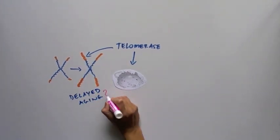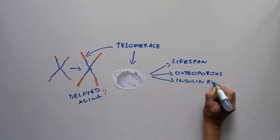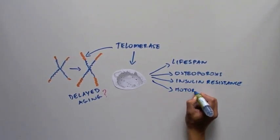So they looked at the lifespan, as well as some aging and health parameters, in mice with or without added telomerase. And what they found was extremely interesting.